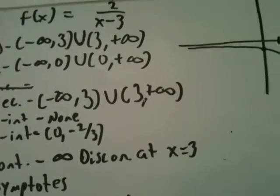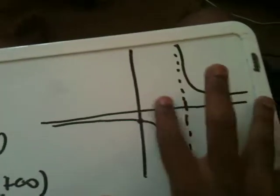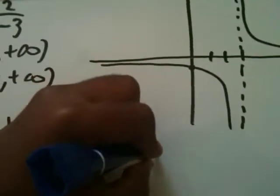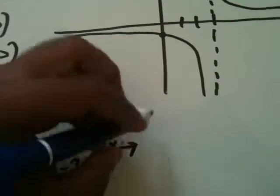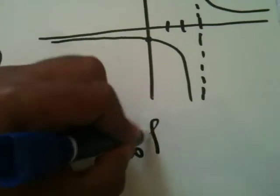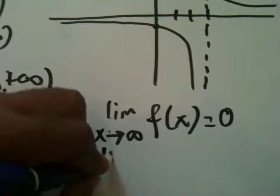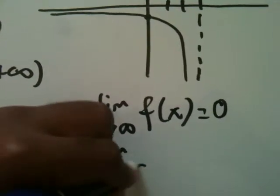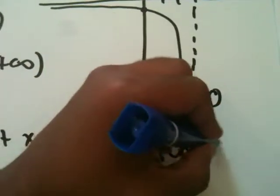Now we're almost done, we just have to now do the end behavior. And I can actually cram the end behavior onto one expression, because they all approach the same value from both directions. So we say the limit as x approaches infinity of f of x is equal to zero, and the limit as x approaches negative infinity of f of x is equal to zero.